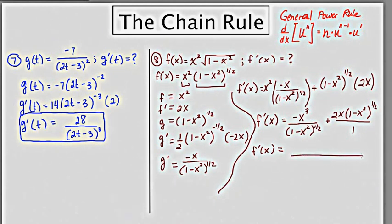the common denominator would be 1 minus x squared to the 1 half, and to get this to look like this, it's not missing anything. But to get this to look like this, I need to multiply it by 1 minus x squared to the 1 half.